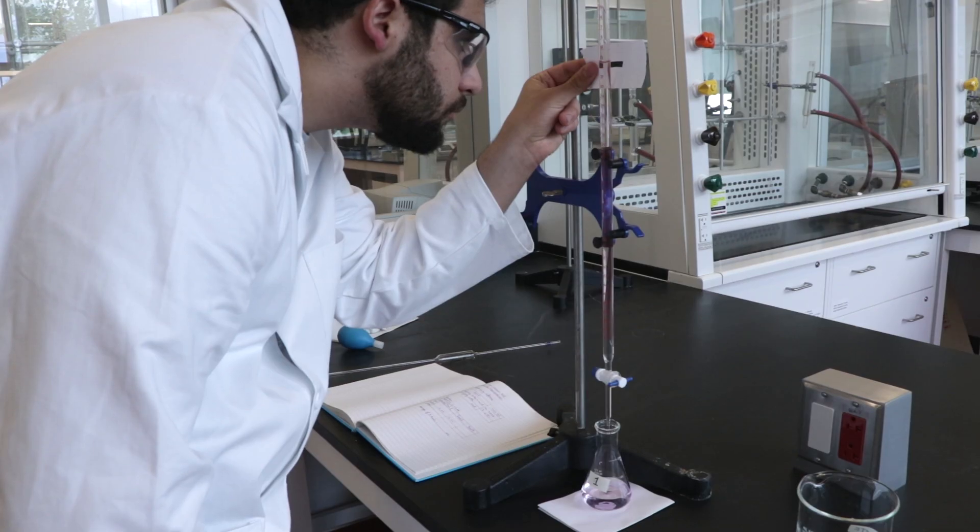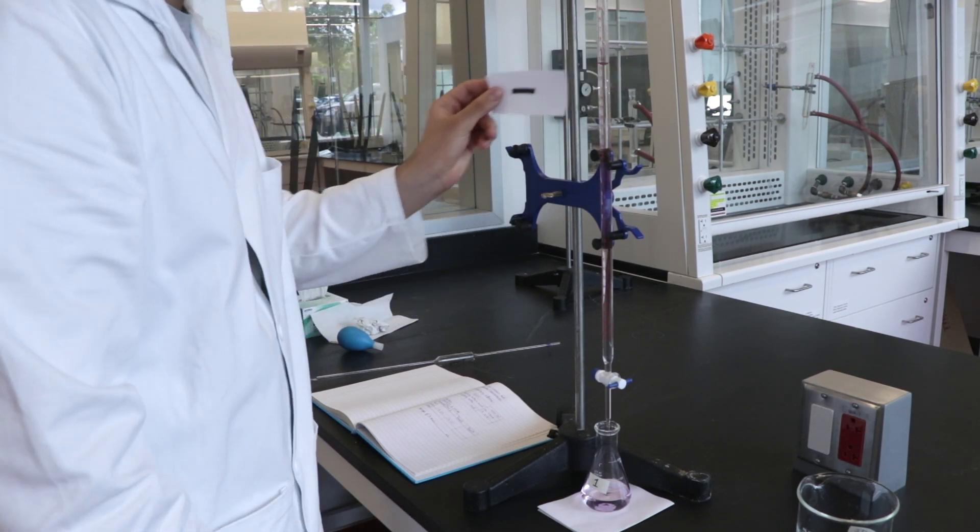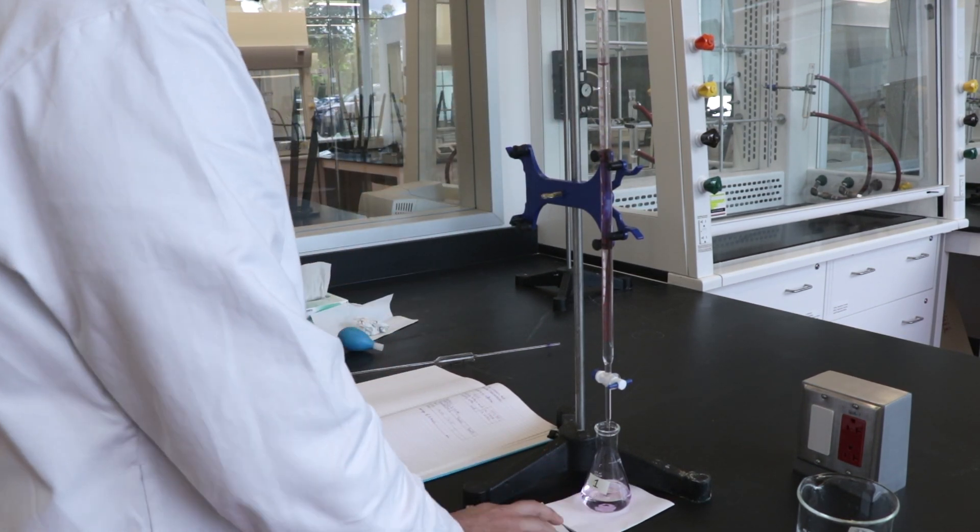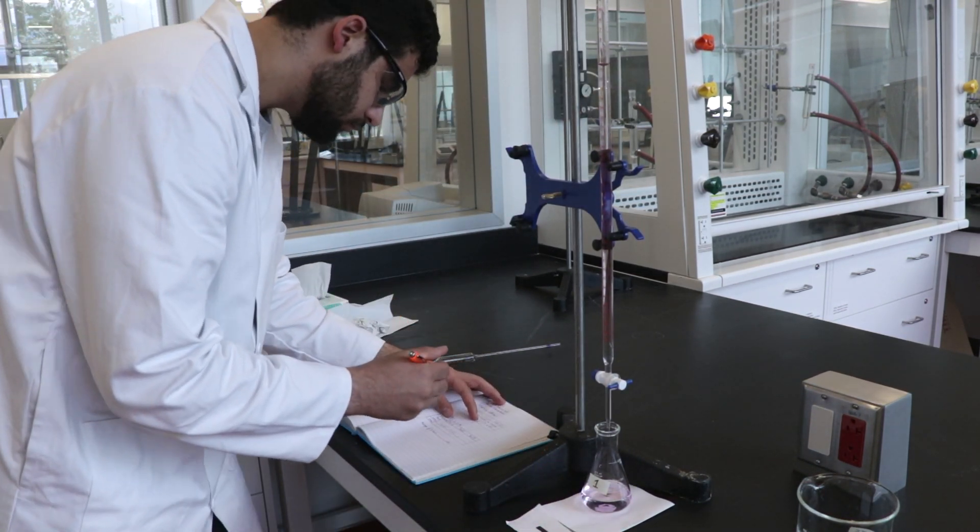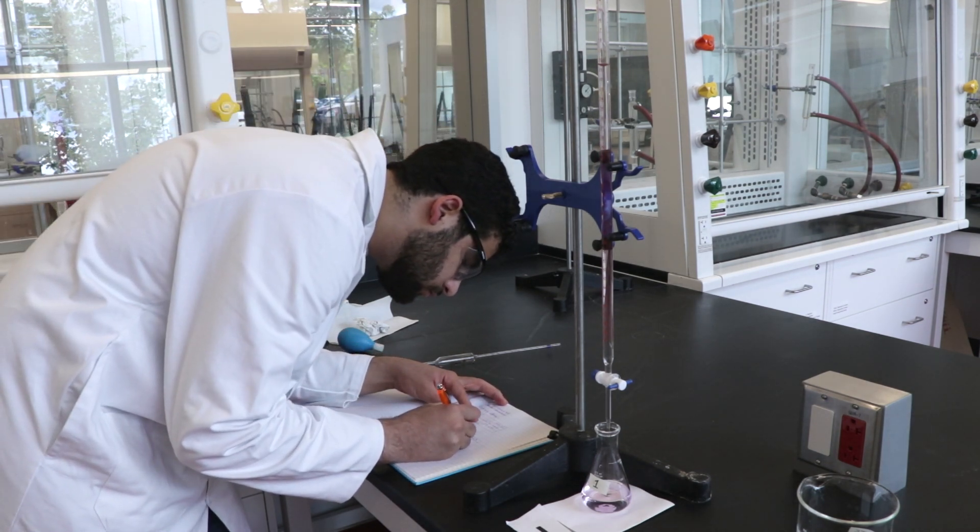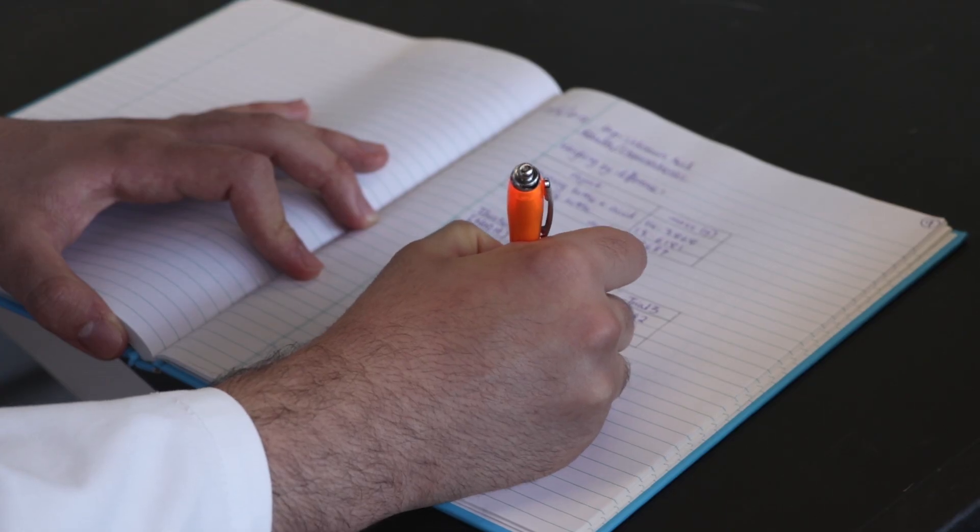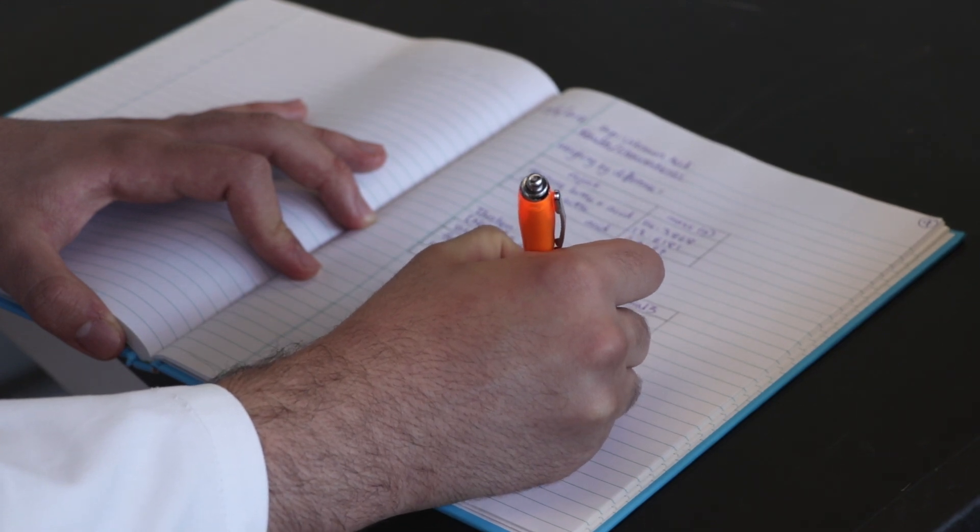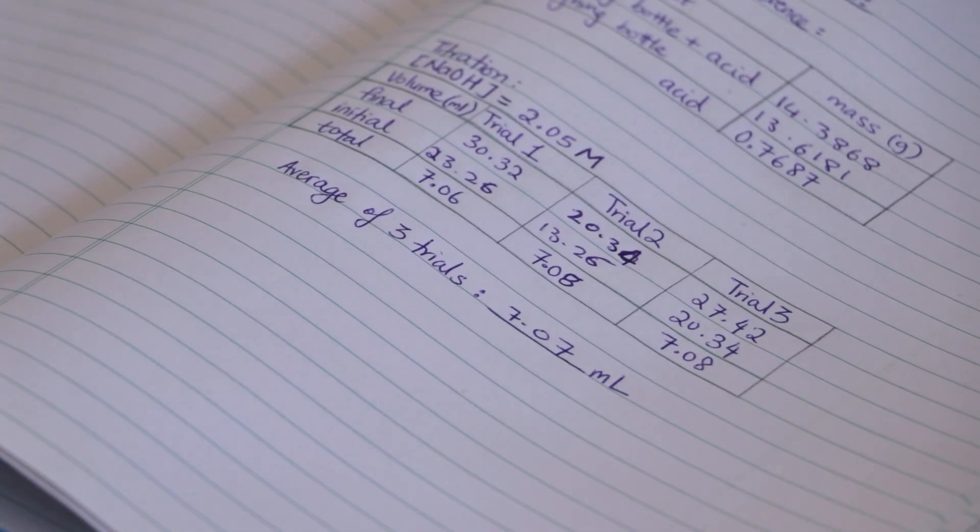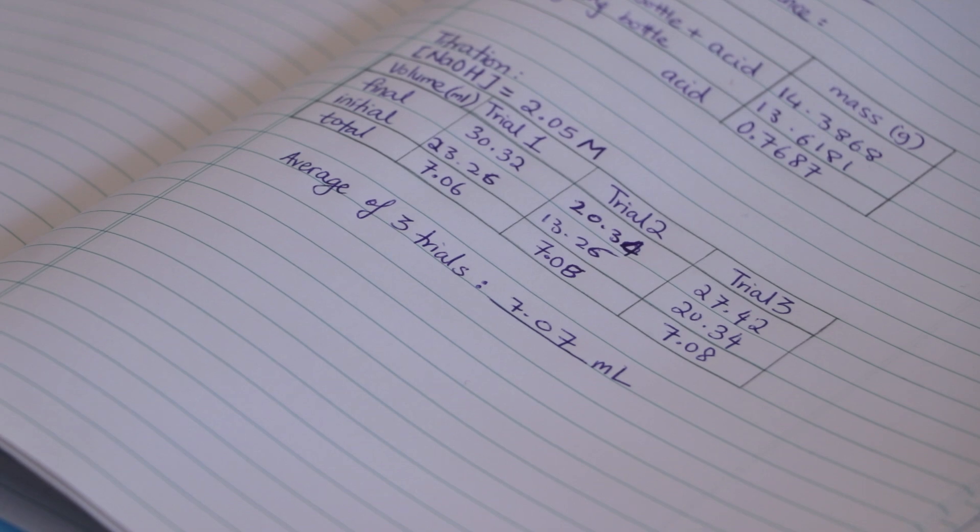Once you have reached the endpoint, read the final volume from the burette and record it in your lab notebook. In your notebook, subtract the initial volume from the final volume to calculate the amount of sodium hydroxide solution needed for the titration. Repeat this process for the remaining two flasks and calculate the average for the three trials.